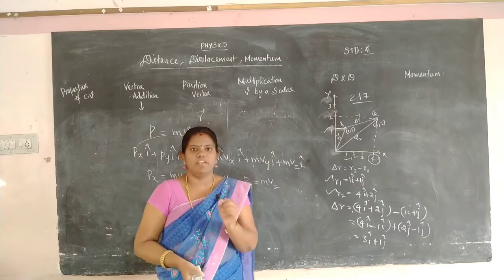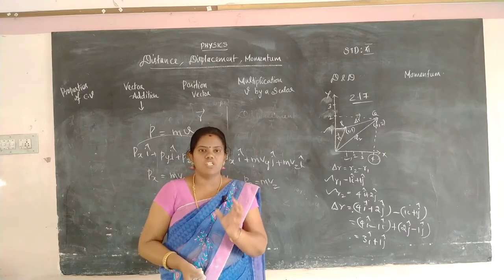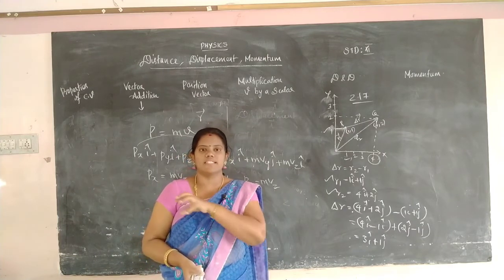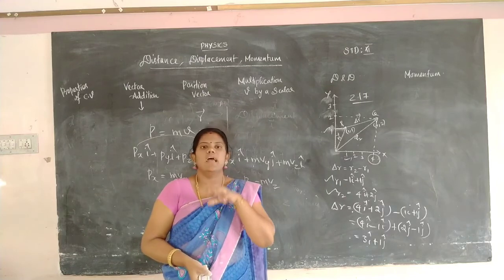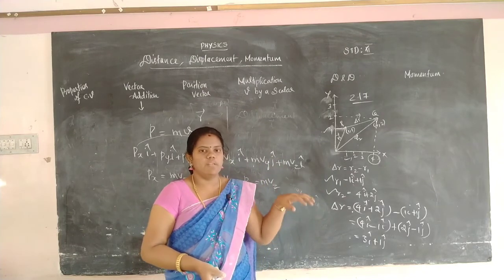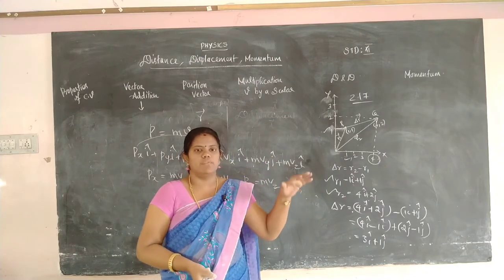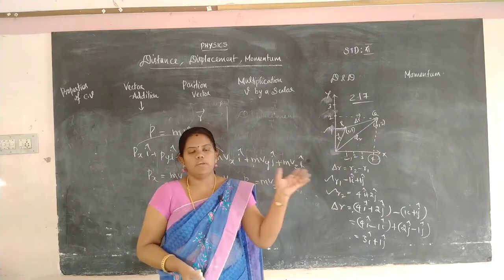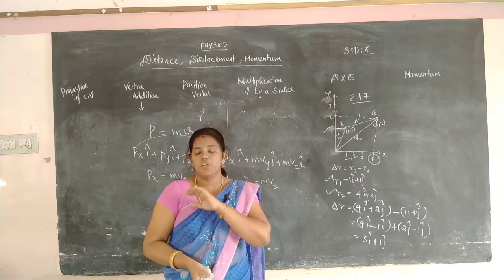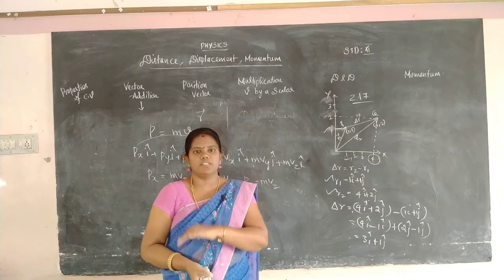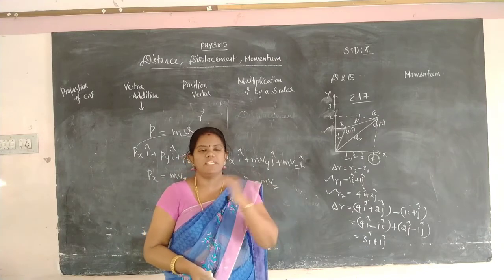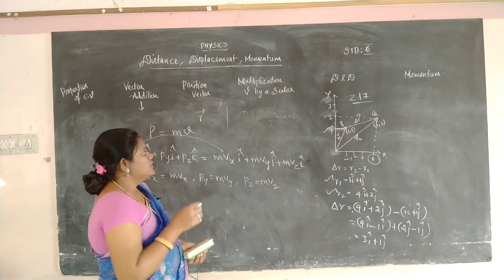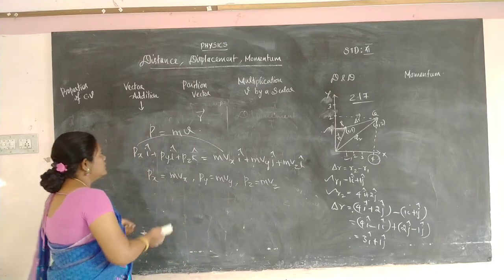Momentum P = m·v, mentioned along X, Y, Z axis: Px = m·Vx, Py = m·Vy, Pz = m·Vz. All these topics — properties of components of vector, vector addition, position vector, scalar multiplication, distance, displacement, and momentum — have been discussed in this session.